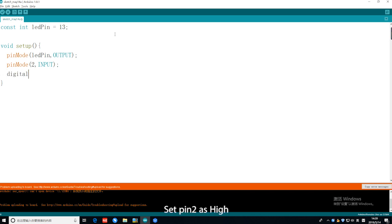Set pin 2 as high. The digitalRead function reads the value from a specified digital pin, either high or low. Here the function reads the value from pin 2 to the digitalVal variable.